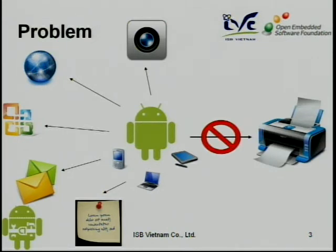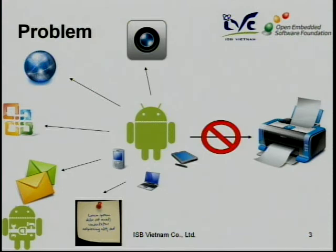Why is that? Because originally, Android was designed for smartphones only, not for tablets or netbooks. Android was founded by four members: Andy Rubin, Rubin, Chris White, and one other. They designed Android for smartphones only, and at that time printability was not very necessary. But after Google acquired it in 2005, Google made Android run on tablets and systems, and then printing ability became necessary.